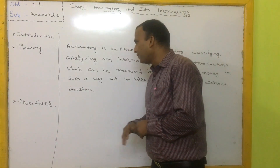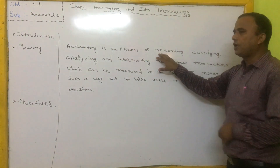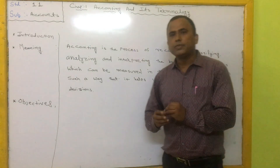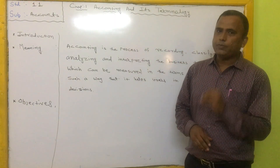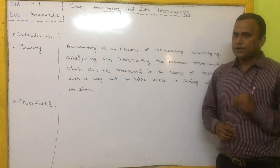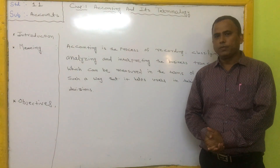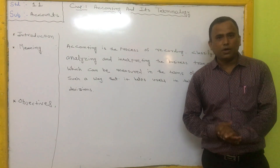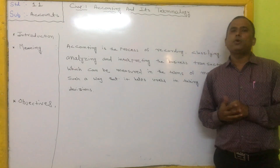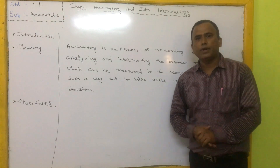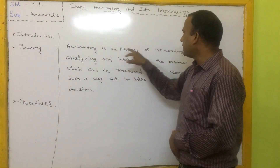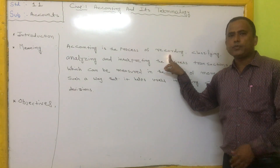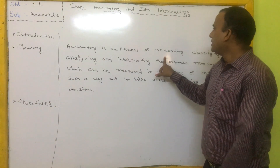As per the definition, accounting is a process of recording. Whatever transactions take place in a business, it is compulsory to record each and every transaction in the accounting book. The condition is that the transaction must be measurable in terms of money — non-economic transactions are not recorded in the accounting book.